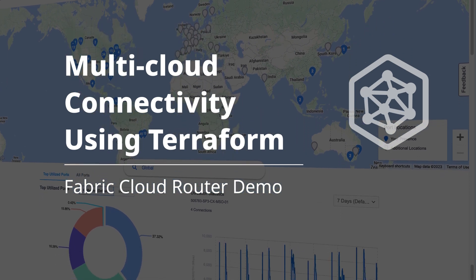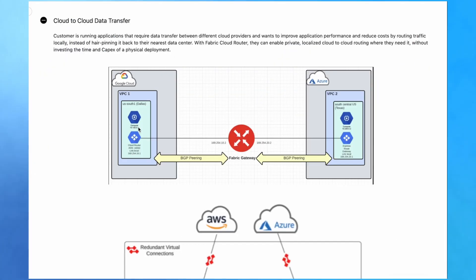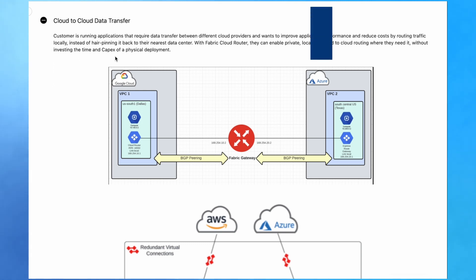Today I am going to present the end-to-end demo for multi-cloud connection using Terraform. We have implemented multi-cloud data transfer between different cloud providers, which will improve the overall application performance and reduce cost by routing traffic locally. Customers can also enable private localized cloud-to-cloud routing without investing the time and CapEx of physical deployment.